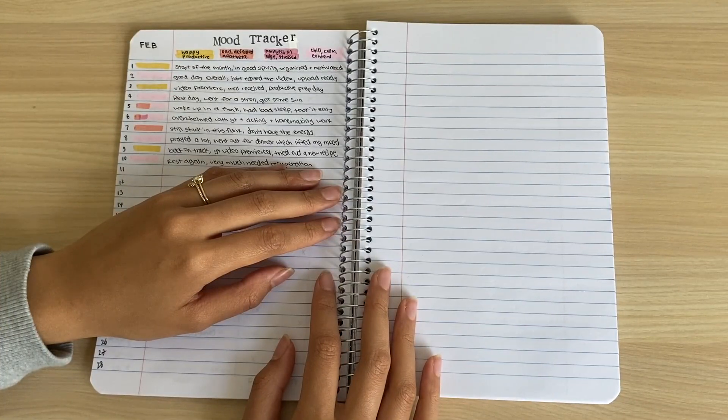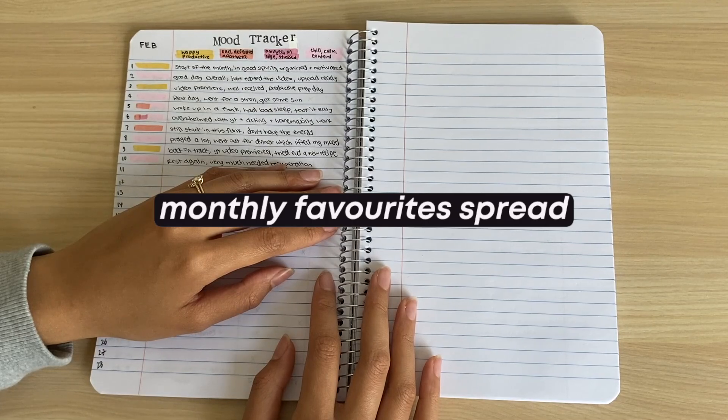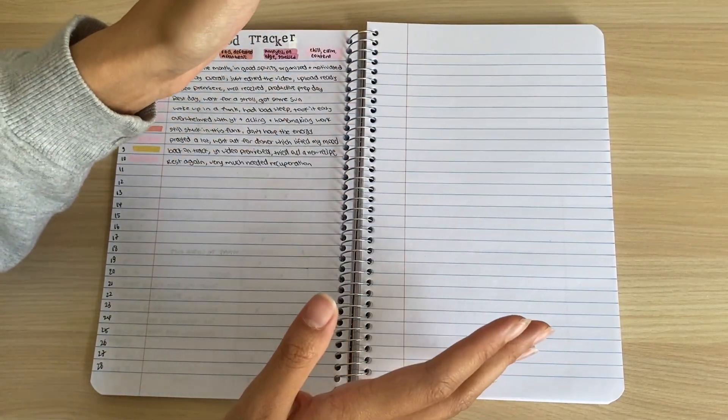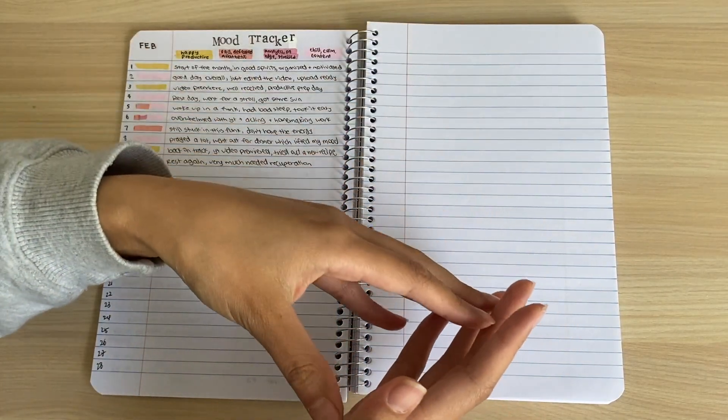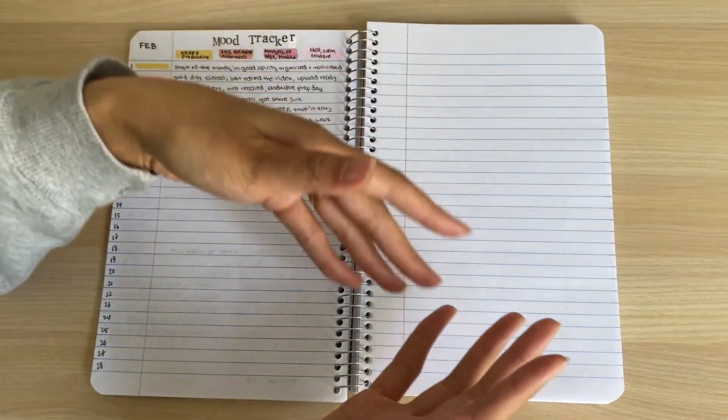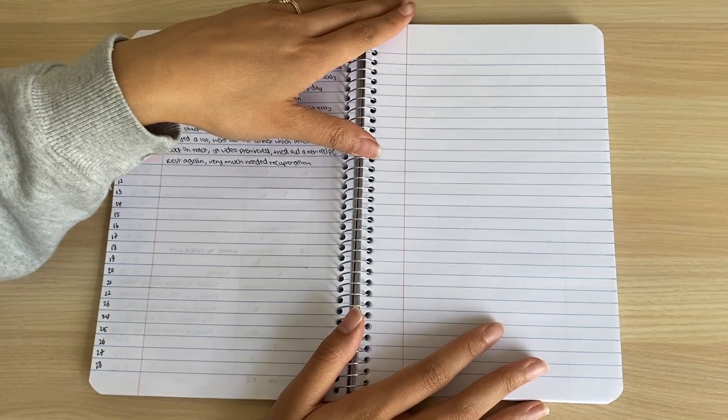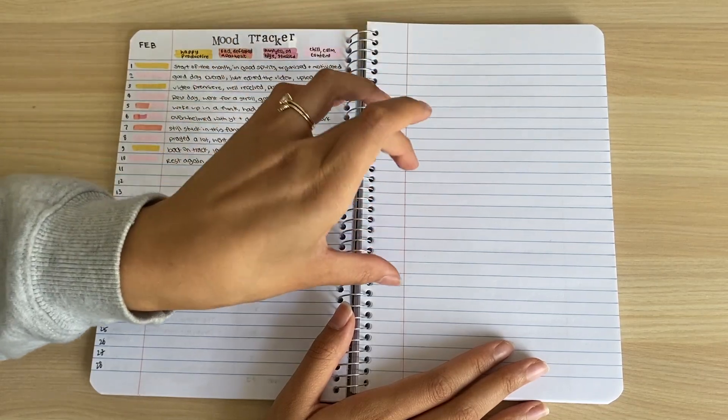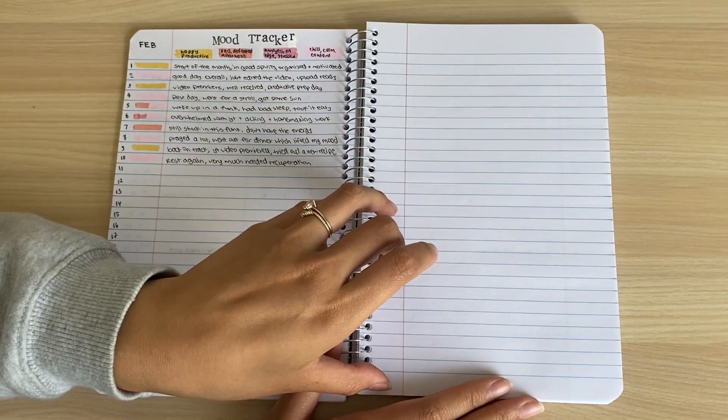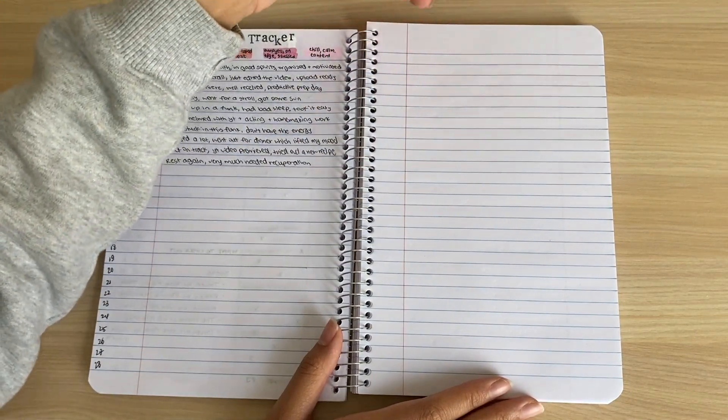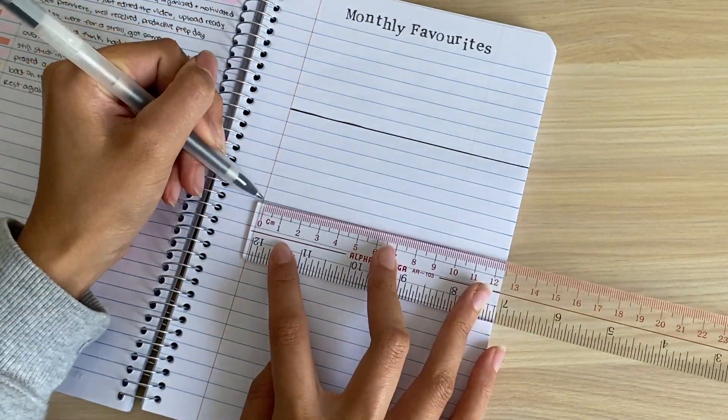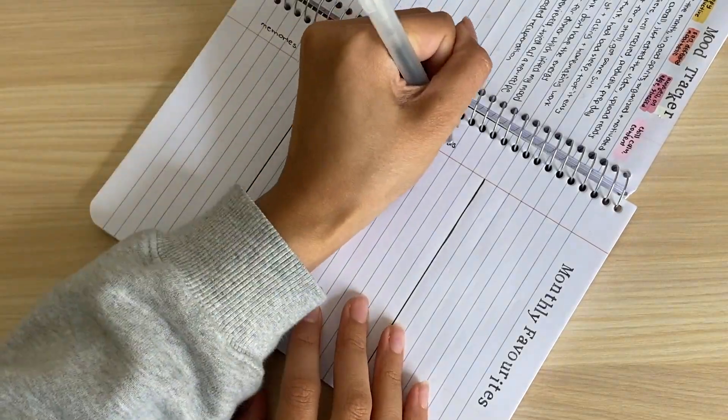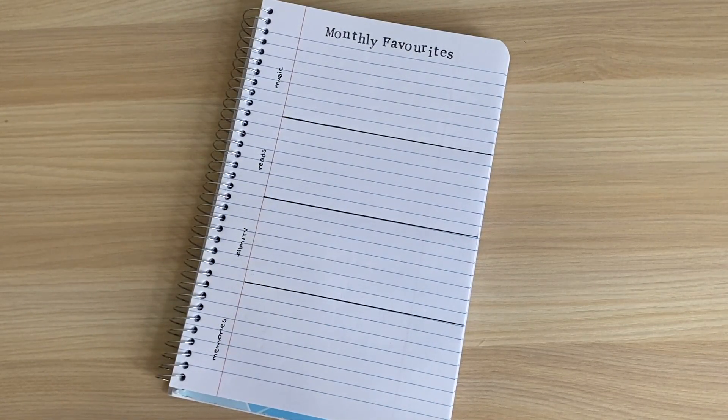The fourth and final spread for this video is going to be a monthly favorites spread. This will take up one page, and you can section off this page however much you like because it really just depends on what kind of categories of favorites you have for the month. For me, as an example, I will do four sections. This will represent favorite music, favorite reads, favorite film and TV, and favorite moments and memories for the month. Starting off with the header, I will stamp out 'monthly favorites.' And here we have it.